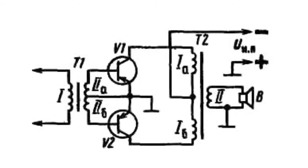The T1 transformer is intermediate, connecting the preliminary cascade with the output amplifying inlet. The T2 transformer is outlet.